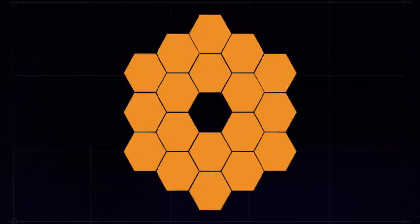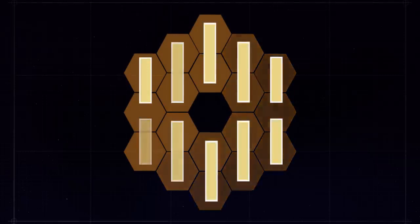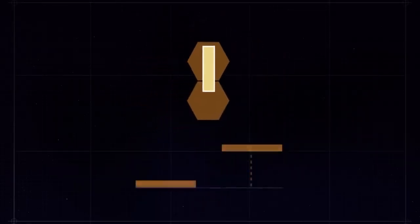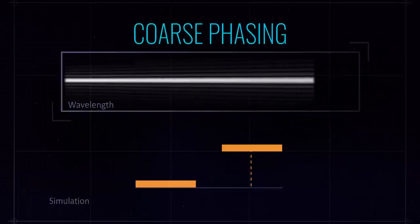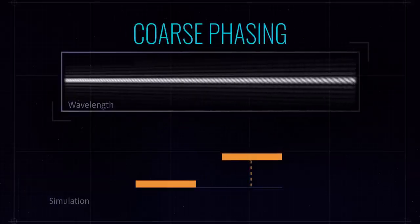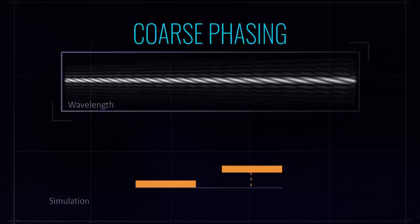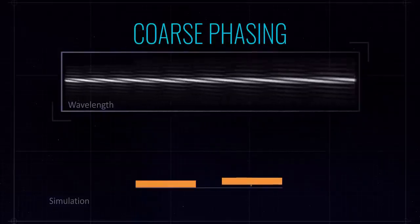And the next phase in the process is something we call coarse phasing. And that's where we adjust, literally, it's the piston, the up and down motion of the mirror segments relative to each other. We control the piston of the segments so that they all come together in creating a complete monolithic primary mirror.